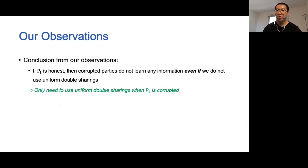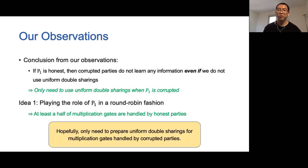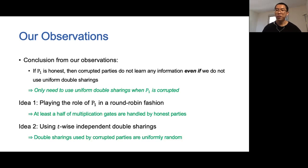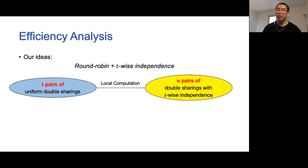In other words, uniform double sharings are only needed when the first party is corrupted. Indeed, during protocol execution, we cannot distinguish whether the first party is honest or corrupted. Our idea is to play the role of the first party in a round-robin way. It ensures that at least half of the multiplication gates are handled by honest parties. We only need to prepare uniform double sharings for multiplication gates handled by corrupted parties. To this end, our second idea is to use t-wise independent double sharings, which ensures that the double sharings used by corrupted parties are uniformly random.